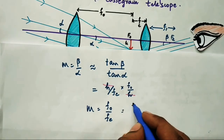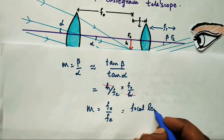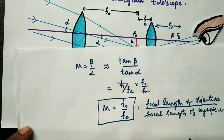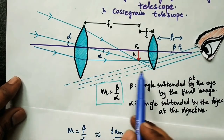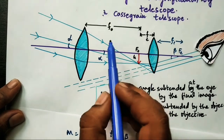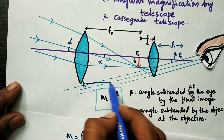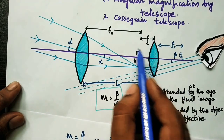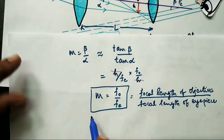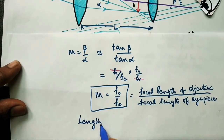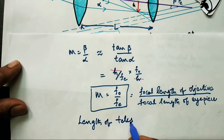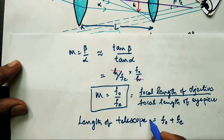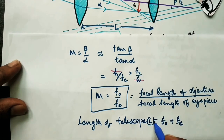The magnification produced is fo/fe, where fo is the focal length of the objective and fe is the focal length of the eyepiece. From this equation it is clear that the objective must have a greater focal length to produce a magnified image. The length of the telescope tube is the distance between the two lenses, which equals the sum of the focal lengths fo and fe, denoted by L.